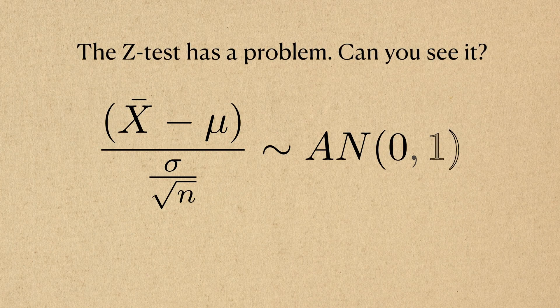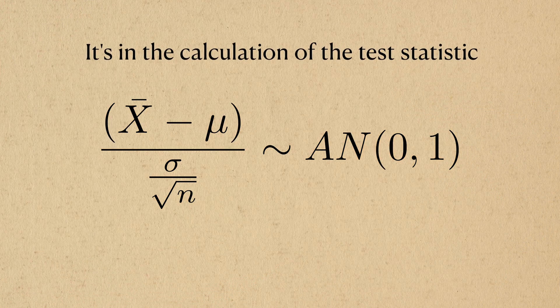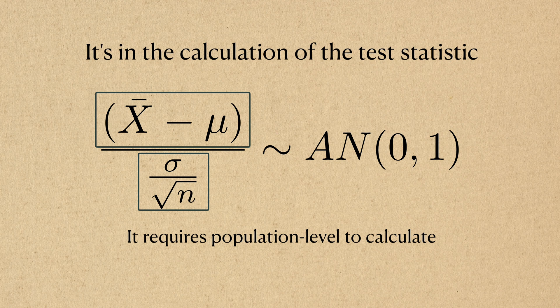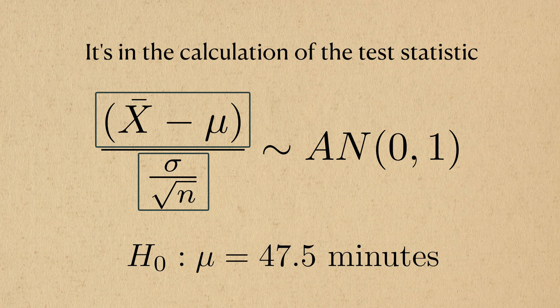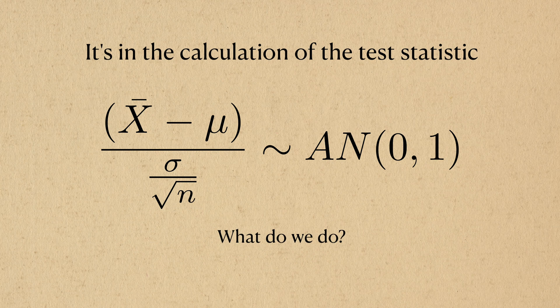But the Z test has a glaring problem. Can you see it? To even calculate the Z statistic, you need to know both the population mean and the variance. While the null hypothesis will tell us what the population mean will be, we're still stuck with an unknown value for the variance. So how do we get around this?